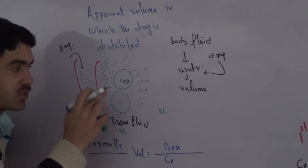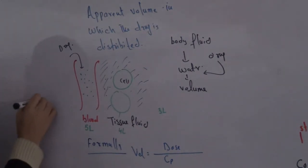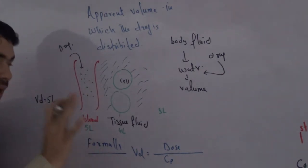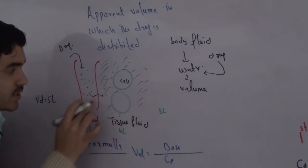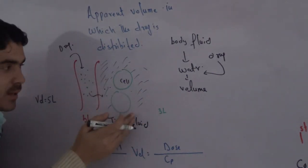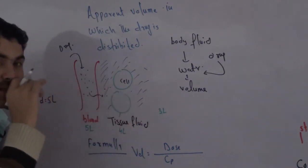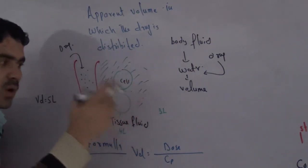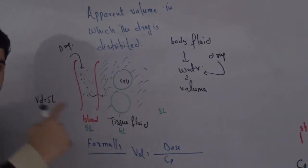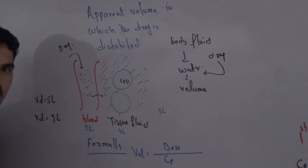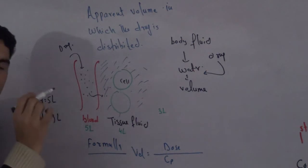The water inside the cell is 3 liters. If the drug remains only in the blood and is unable to enter the tissue fluid, we say the volume of distribution is 5 liters only. But if the drug also distributes into the tissue fluid — the water outside the blood in the interstitial spaces — the volume of distribution increases: 5 liters plus 4 liters equals 9 liters. The more the drug distributes itself, the higher the volume of distribution.